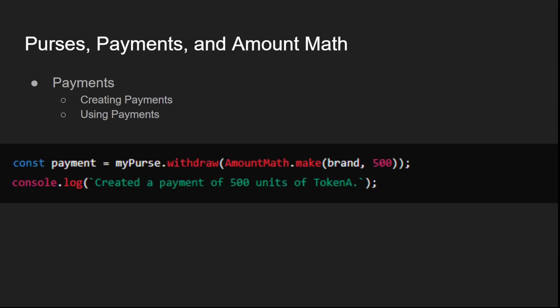Payments are the spendable representations of digital assets. They are used to transfer assets between participants. Payments are typically created during the minting process or by withdrawing assets from a purse. You can use payments to send assets to another participant or to interact with smart contracts.